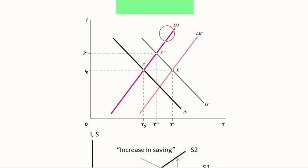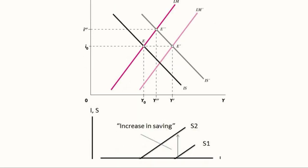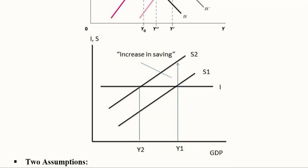Not just one curve can be shifted — more than one shift can take place in both curves simultaneously. This is how comparative static analysis of the simultaneous equilibrium in the goods and money market can be studied. Another possibility is an increase in savings: the saving curve shifts, and the initial equilibrium level of national income y1 moves to a new equilibrium y2.